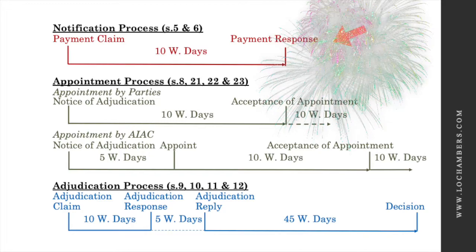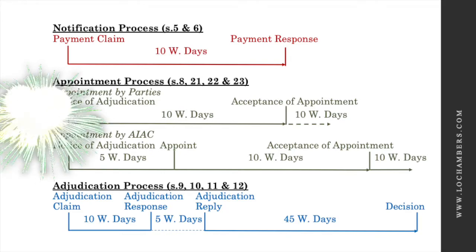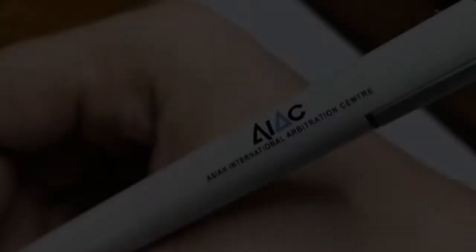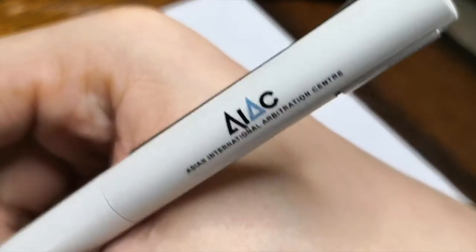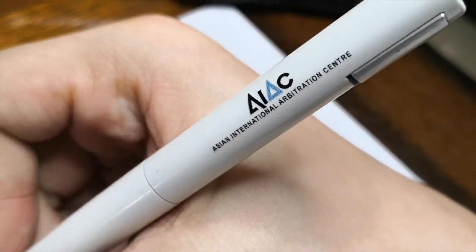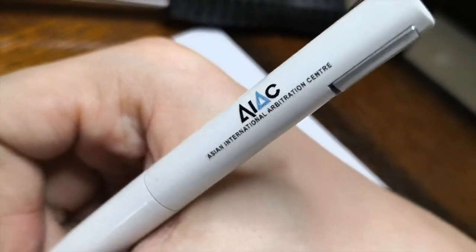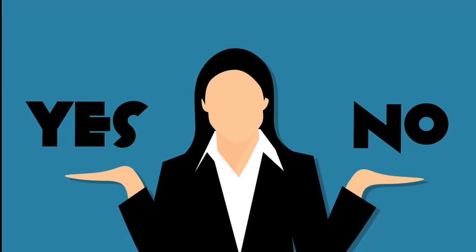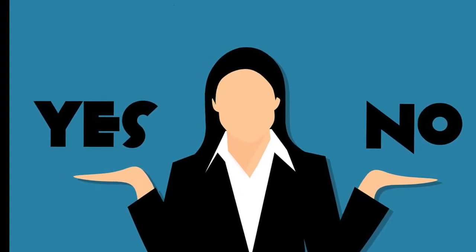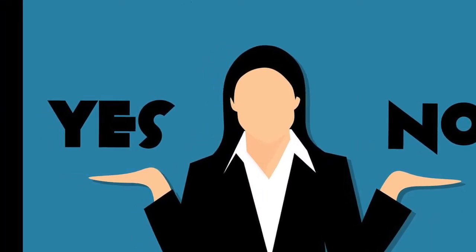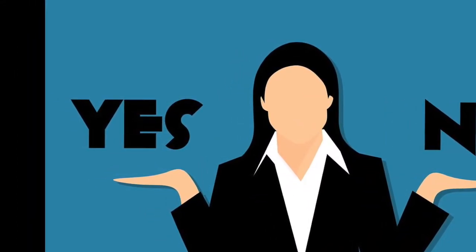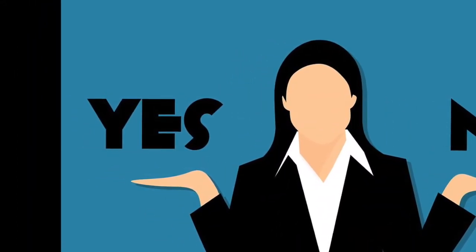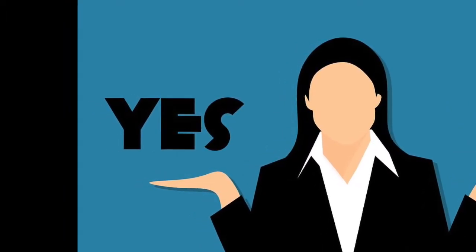Upon the expiry of the 10 days or once a response is provided, whichever is earlier, the parties can proceed to either agree to name and appoint an adjudicator to hear the matter, or request the AIAC — the Asian International Arbitration Centre — to appoint an independent adjudicator. Because the SIPA proceeding is prescribed under a statute, even if the non-paying party disagrees or chooses not to respond, the proceeding can still carry on. Hence, it is better not to ignore it.